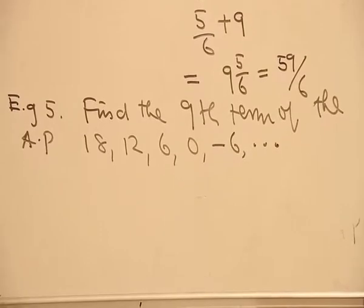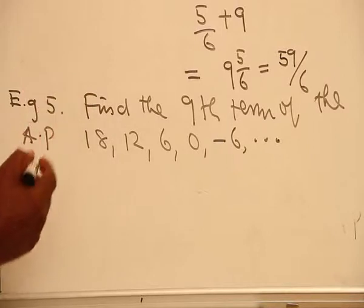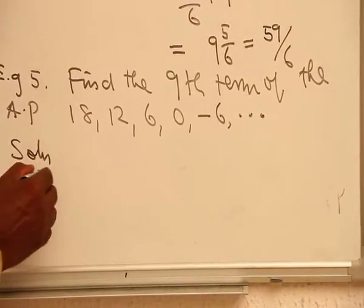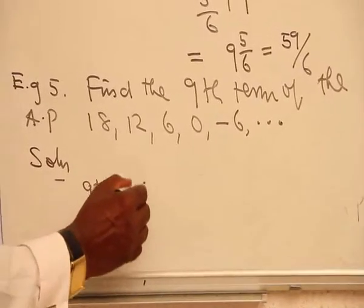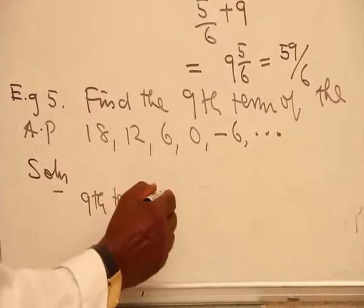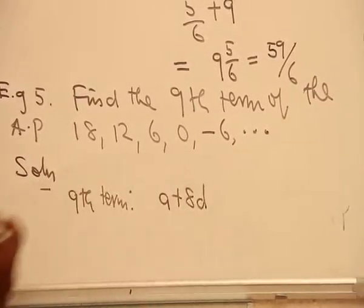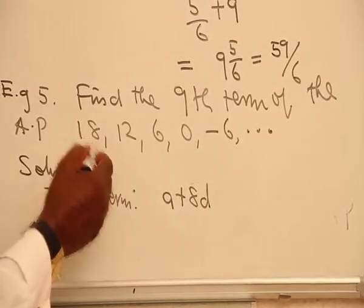When we find the 9th term, the process remains the same. So in the solution, you take the 9th term, and the general form of that is A plus 8D.